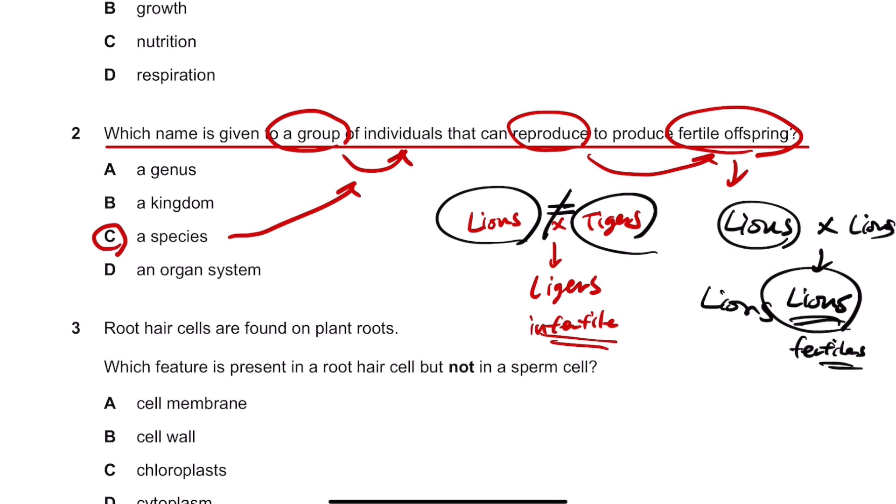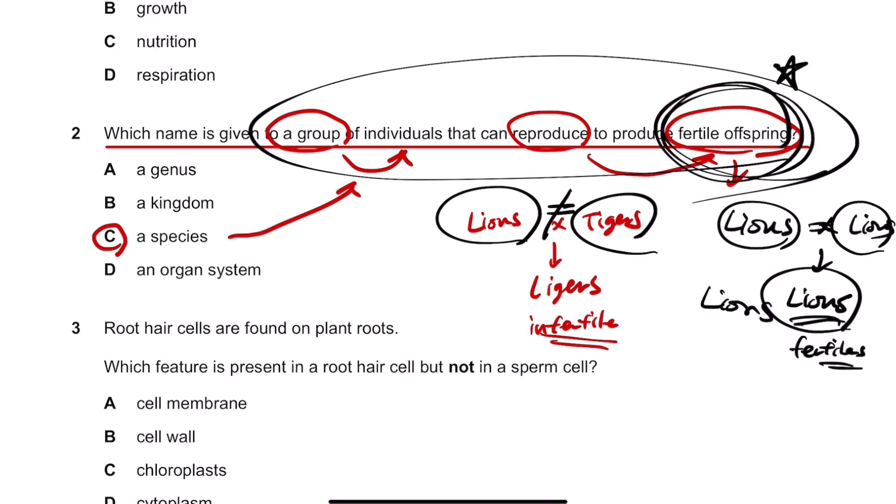Therefore, lions and the lions are the same species. Species are a group of individuals that can reproduce, produce fertile, this is important, very important, fertile offspring.